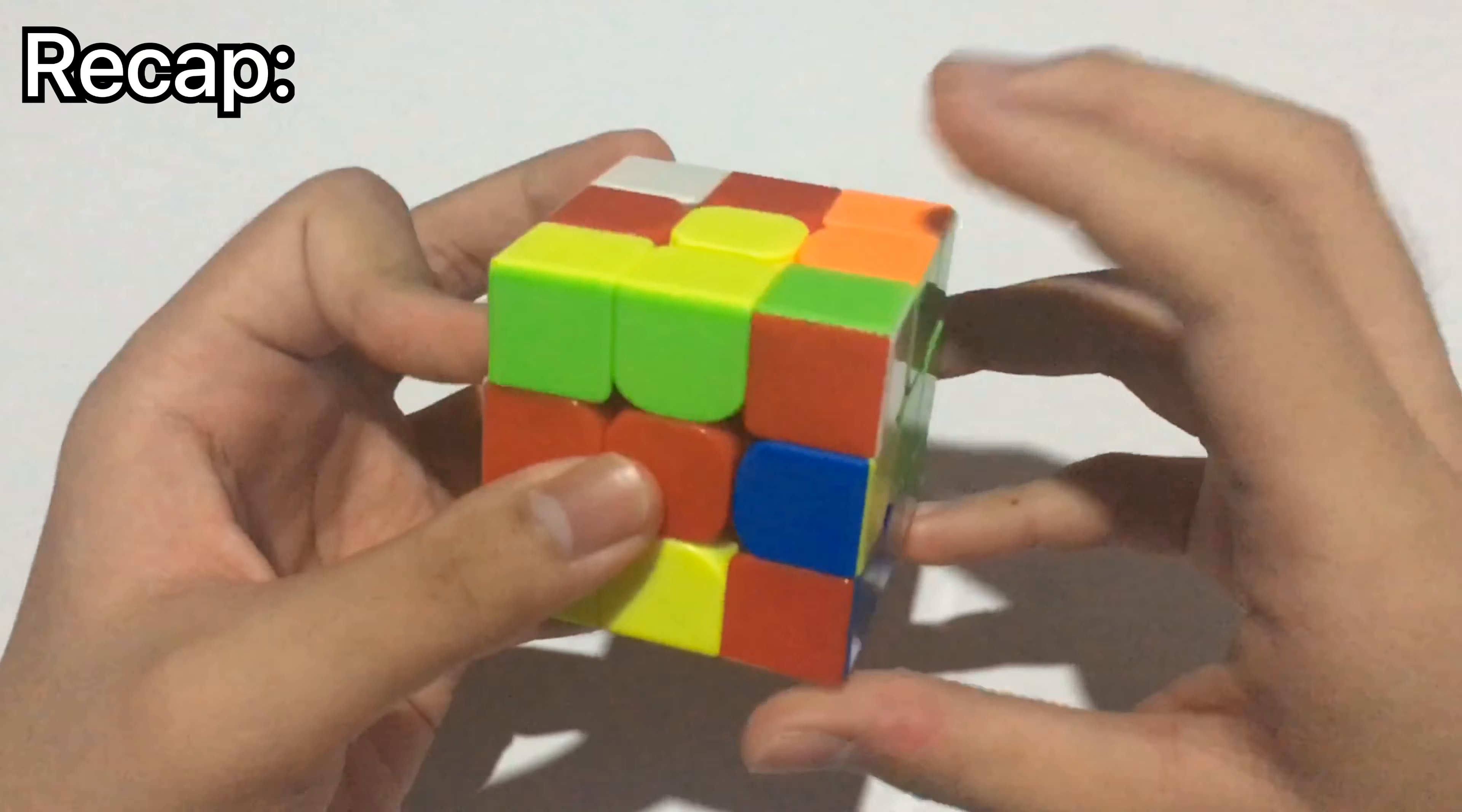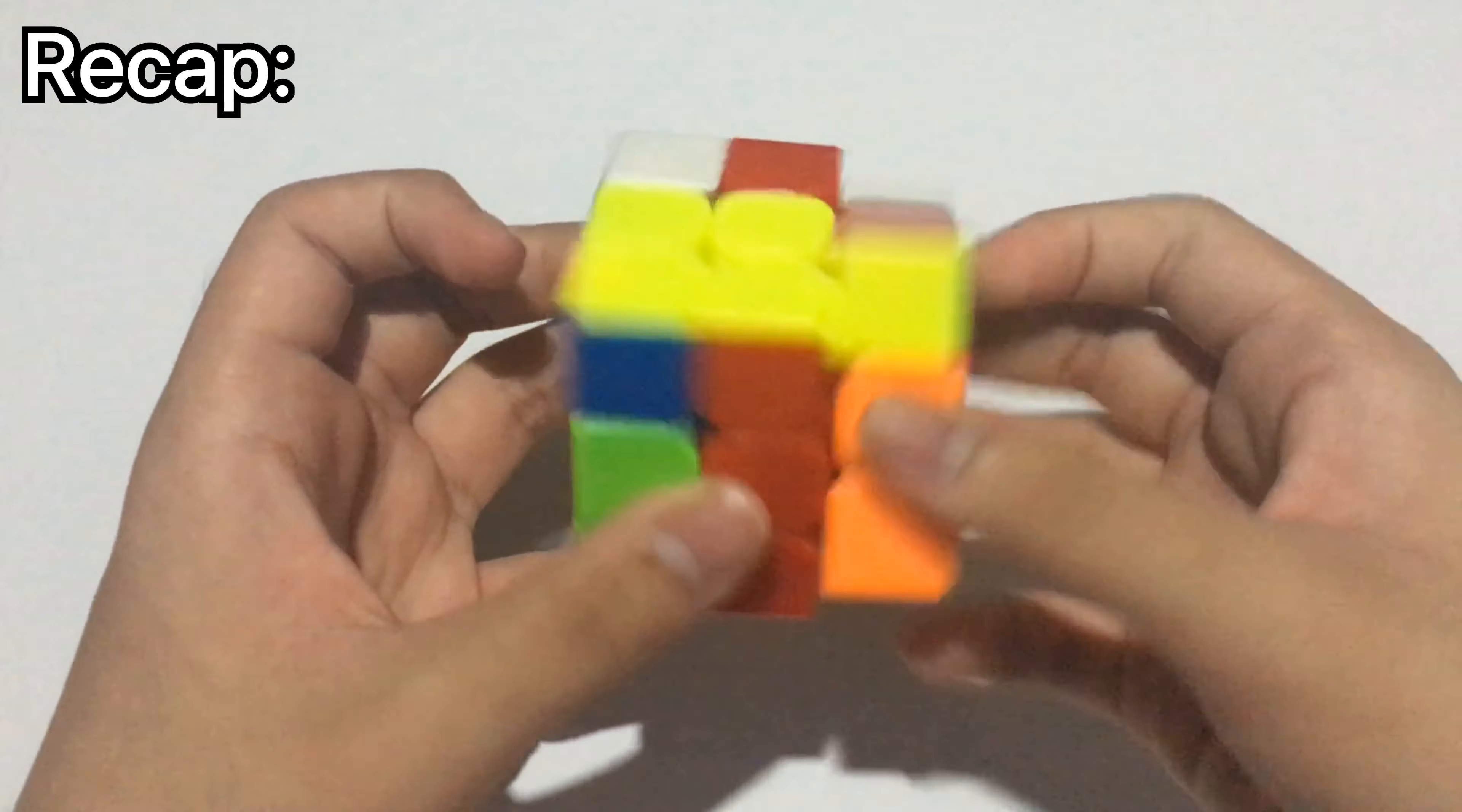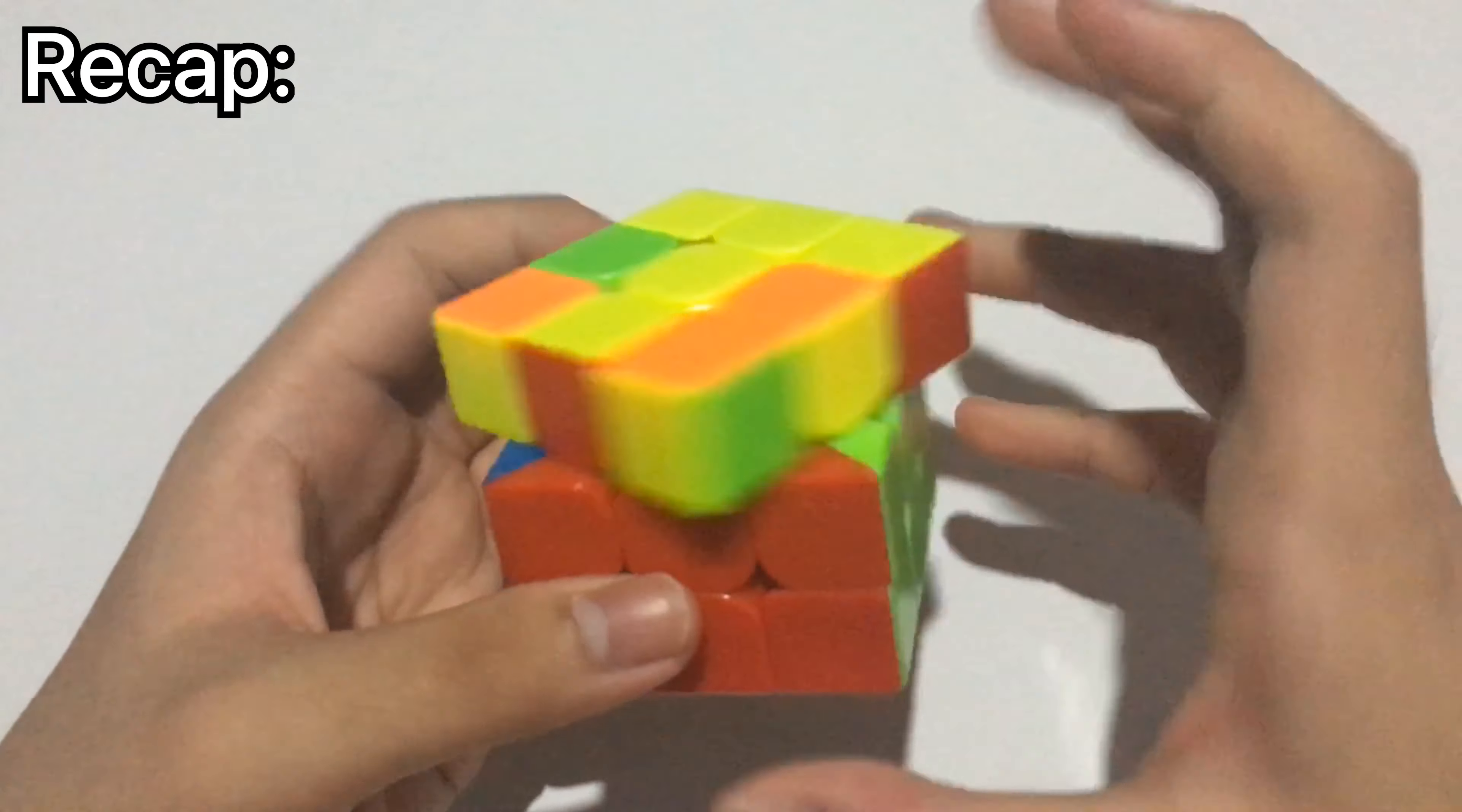then inserted it into the back without doing any rotation. Then solve this pair, this 3-move insert, then last pair, then easy OLL.